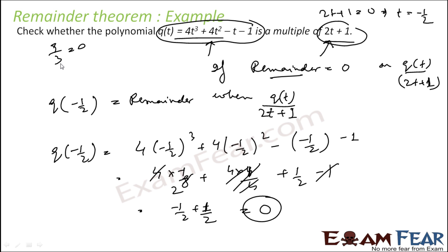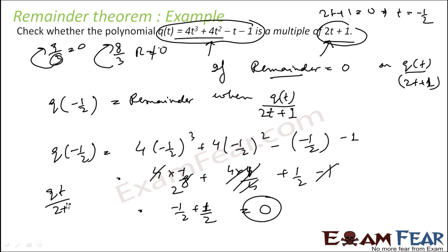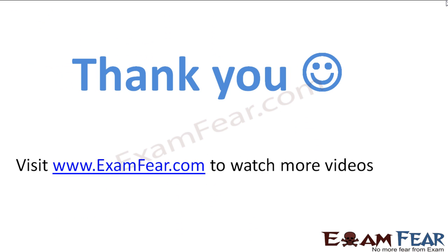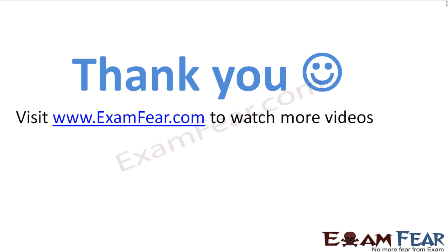Just like 9 ÷ 3 has remainder zero so 3 is a multiple of 9, but 8 ÷ 3 has a non-zero remainder so 3 is not a factor of 8 — same logic applies here. Since q(t) divided by 2t + 1 has remainder zero, 2t + 1 is a factor of q(t), or equivalently, q(t) is a multiple of 2t + 1.